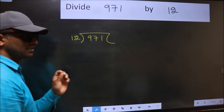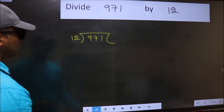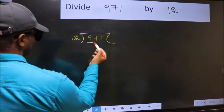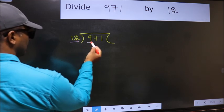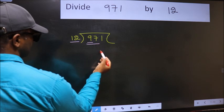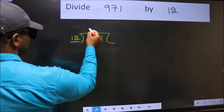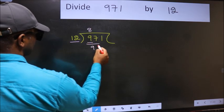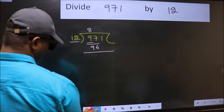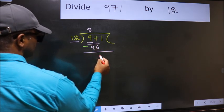This is your step 1. Next, here we have 9 and here 12. 9 is smaller than 12, so we should take two numbers, 97. A number close to 97 in the 12 table is 12×8 equals 96. Now we should subtract. 97 minus 96 is 1.